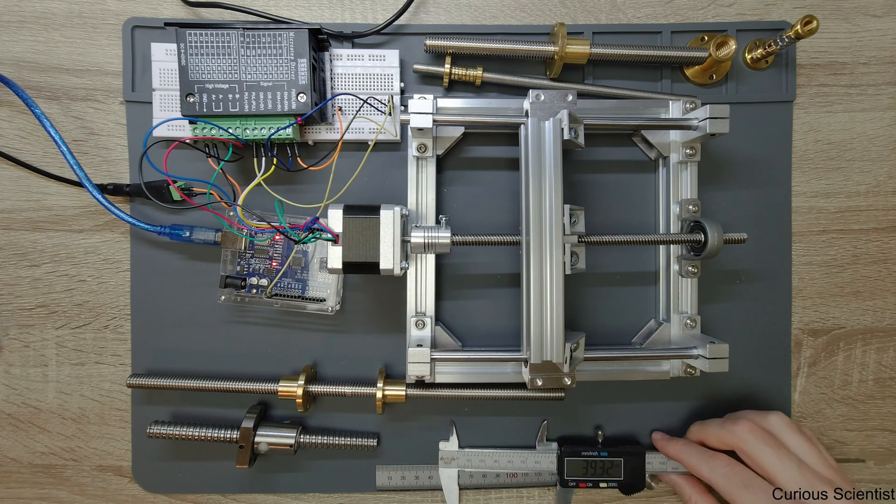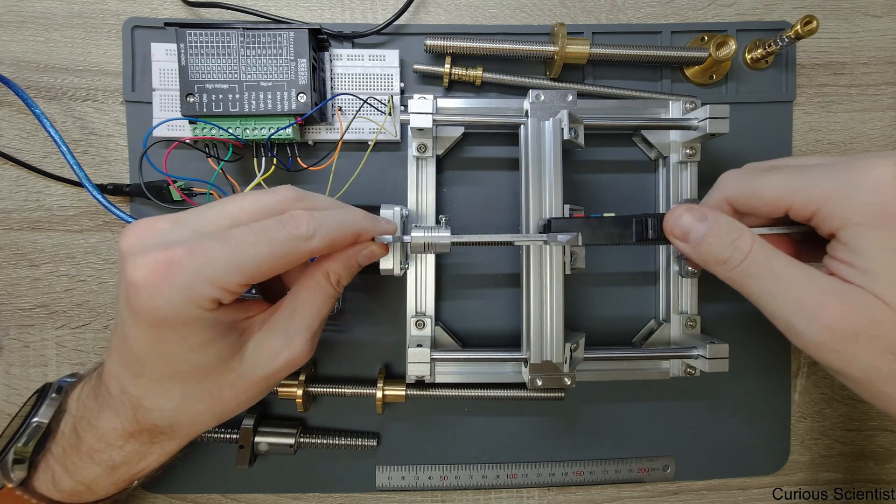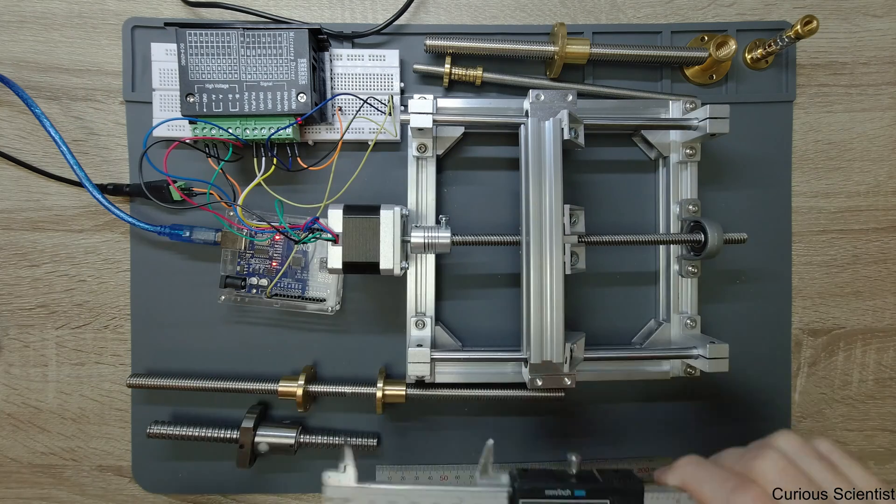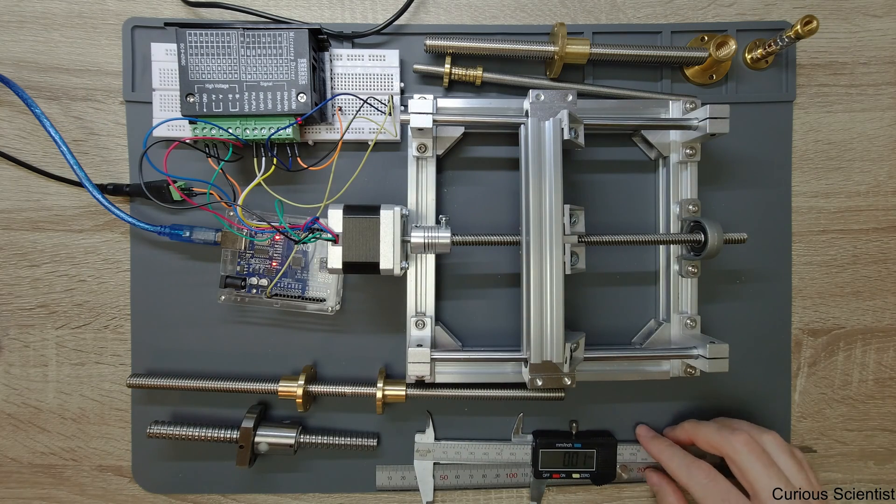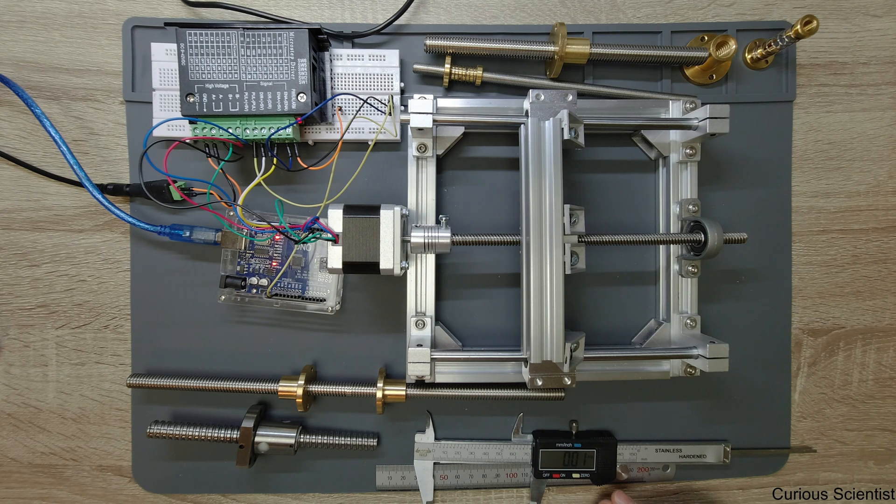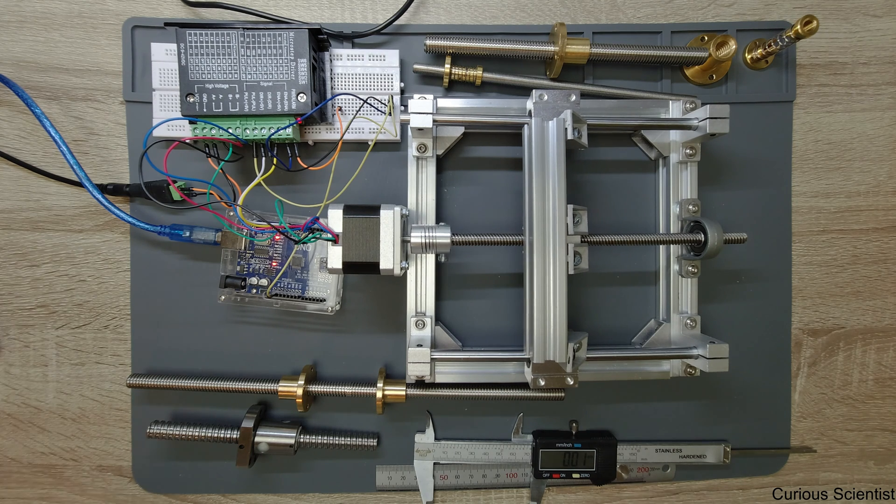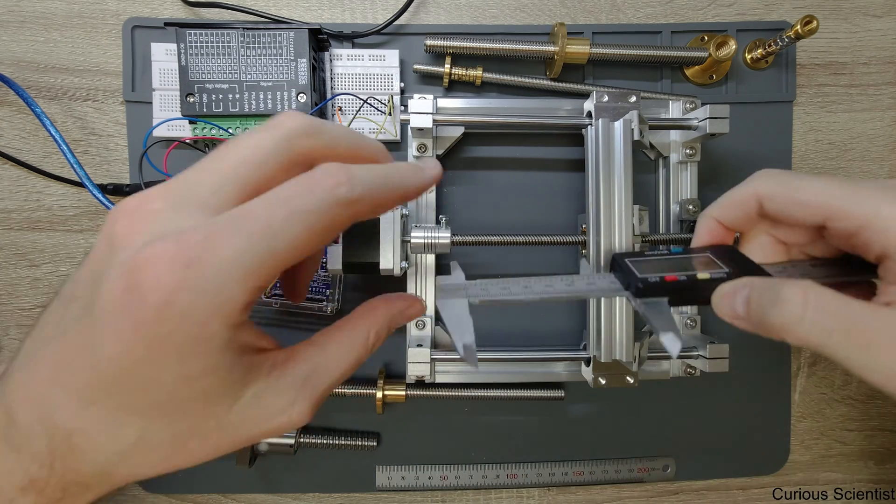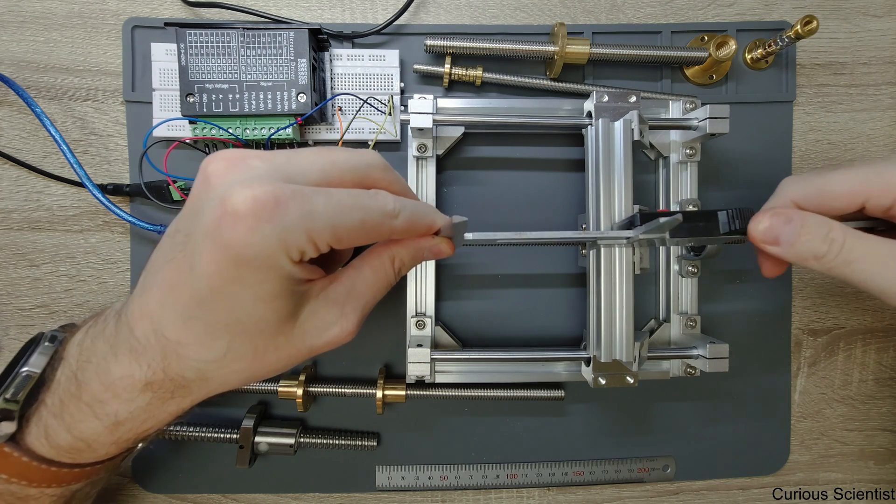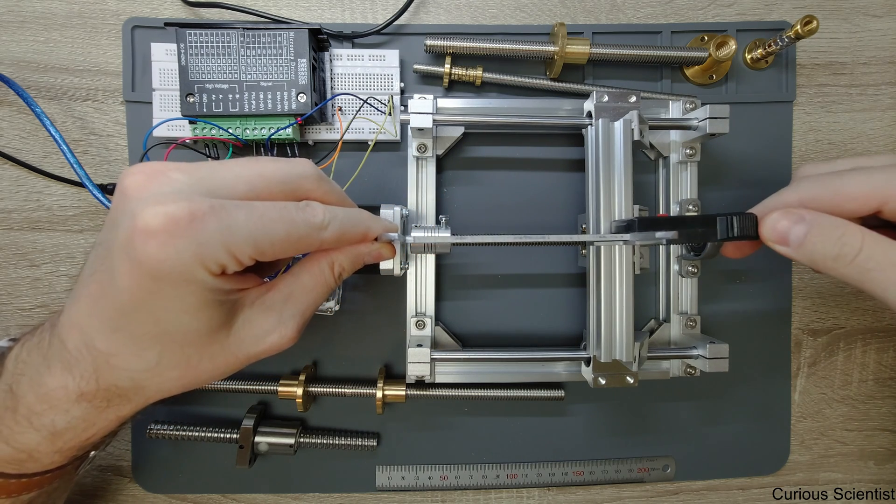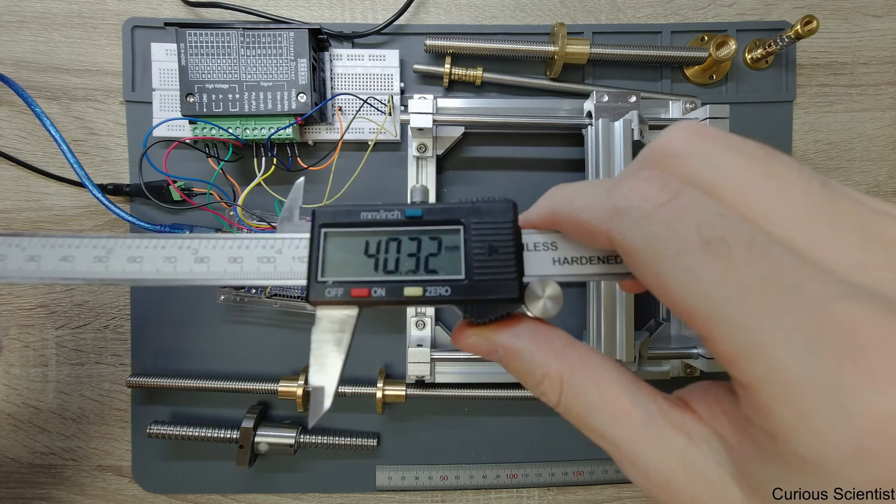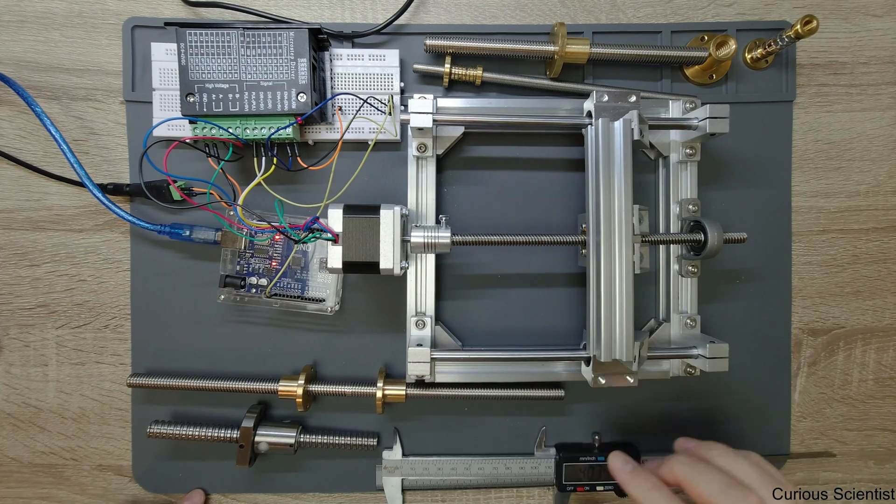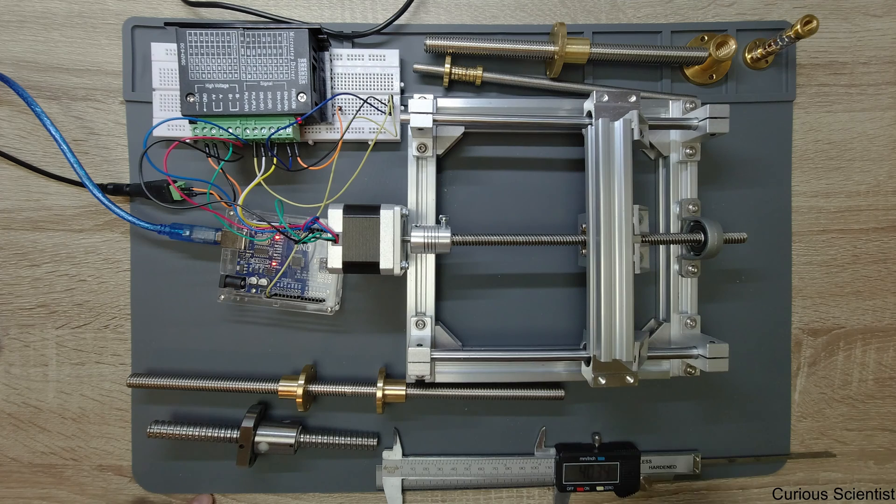And we can continue again. So from this position I zero out this, and I move again the same distance. And we measure again. So this is roughly four centimeters again. And then we can say that we moved eight centimeters.